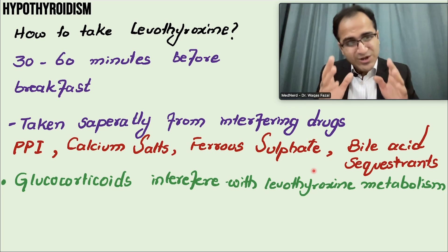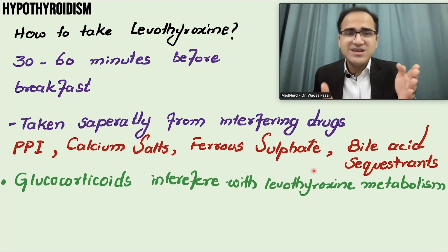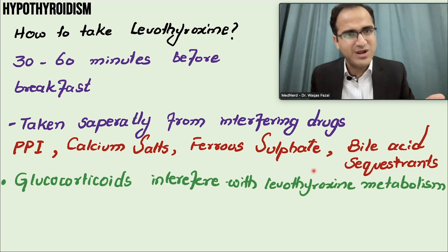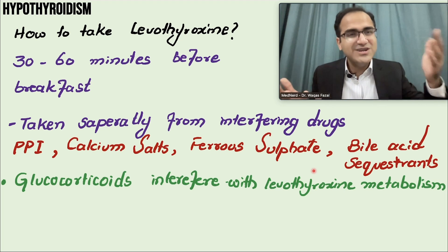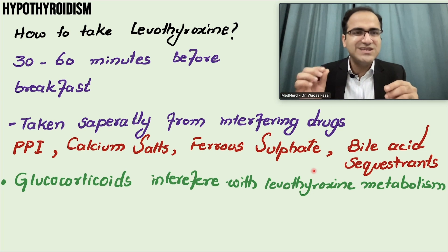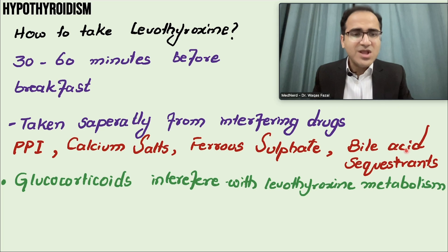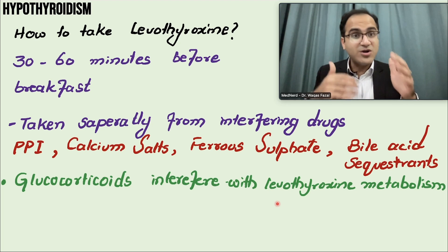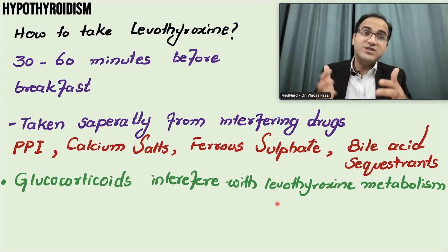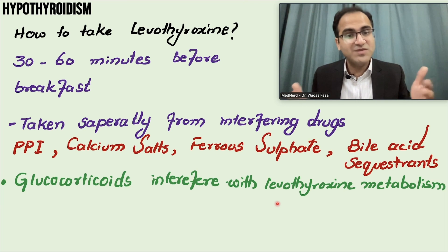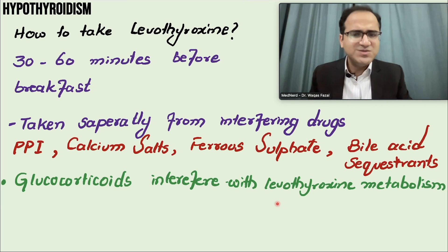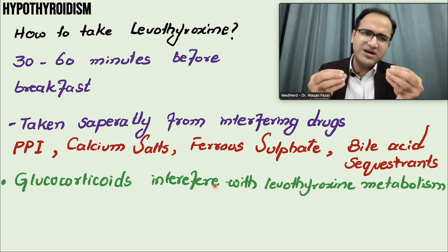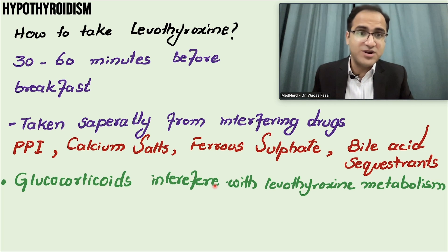In follow-up visits, check whether the patient is taking levothyroxine properly. Many patients take it after breakfast or lunch, which is totally ineffective — so before increasing the dose, verify the patient's adherence and timing. Glucocorticoids can also interfere with levothyroxine metabolism, increasing its breakdown. Patients with Addison's disease or Sheehan syndrome who take glucocorticoids usually need higher doses of levothyroxine.